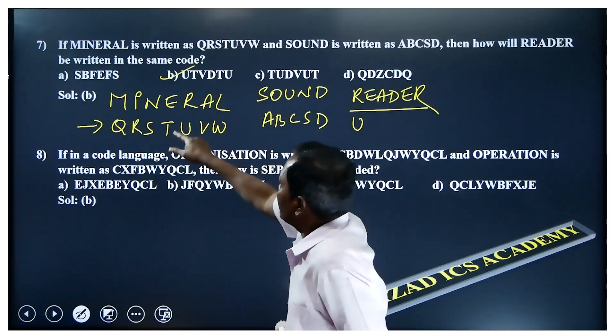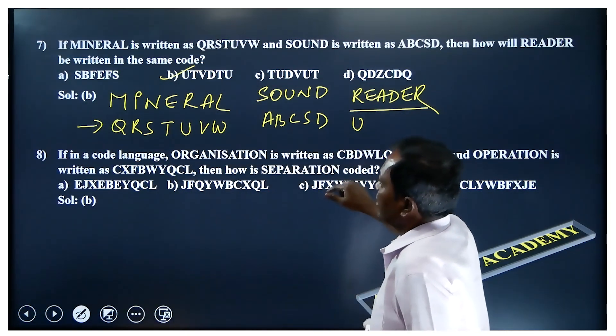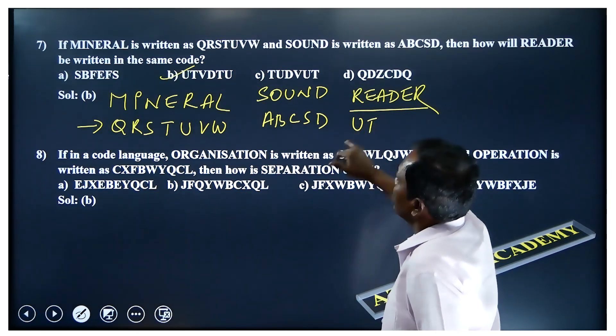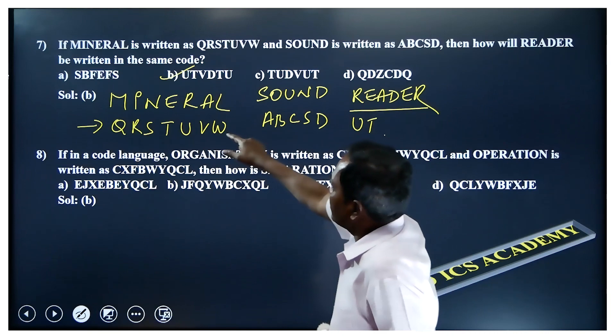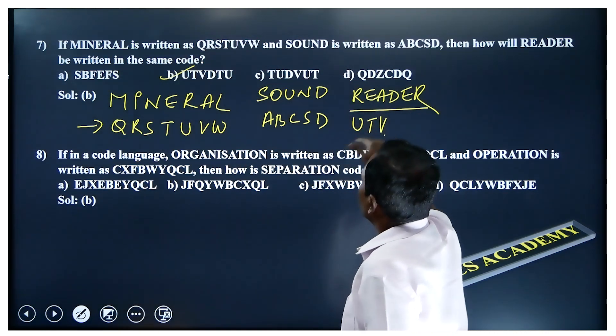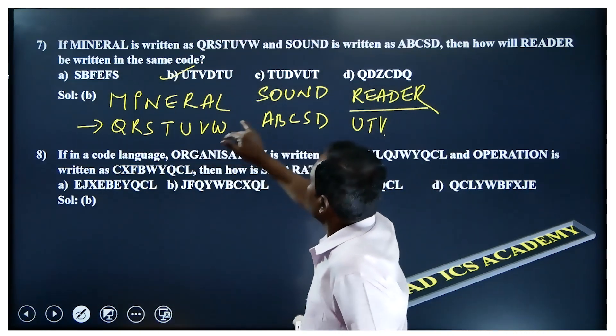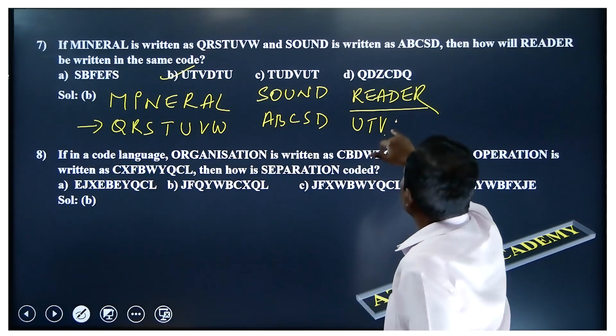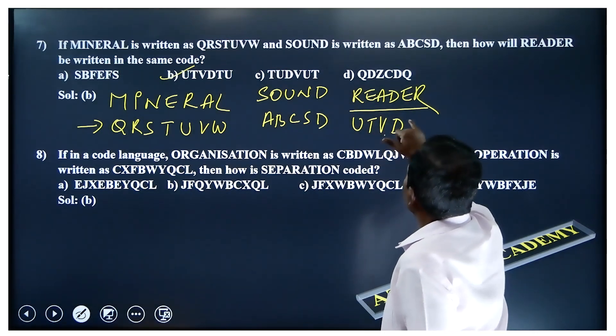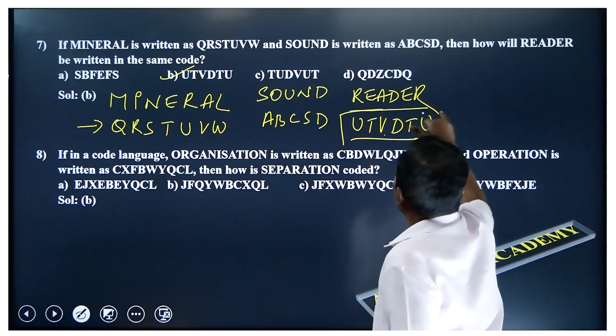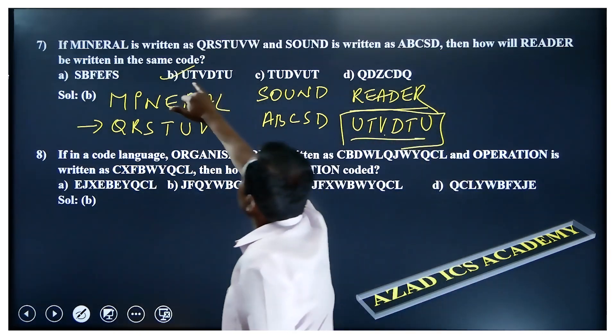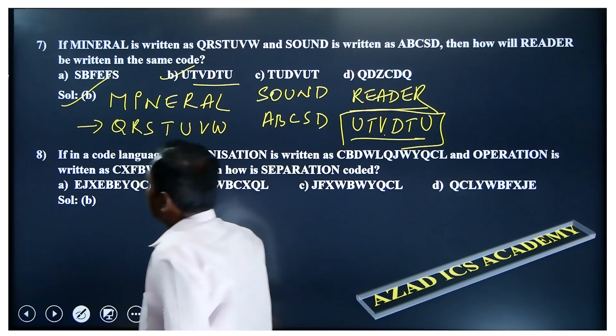Now E, E can be coded as T. Okay. T. Now see that U-T. Okay. Now A can be coded as V. Now D, D can be coded as, SOUND, same. Okay. E again T or U. This is U-T-V-D-T-U. U-T-V-D-T-U. Right. That is the option.